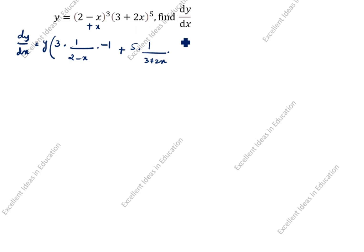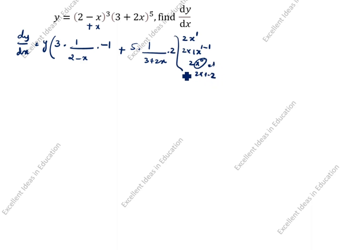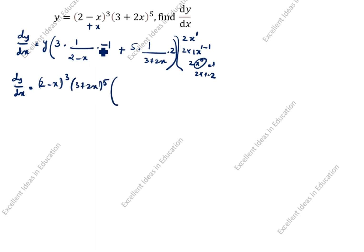Differentiating 2x: 2x power 1, so 2·1·x⁰ = 2. Here where the sign is minus, it gives −1; where it is plus, it gives +1. So dy/dx = y · [3·(−1)/(2−x) + 5·2/(3+2x)]. That gives: y = (2−x)³·(3+2x)⁵, open bracket: −3/(2−x) + 10/(3+2x).